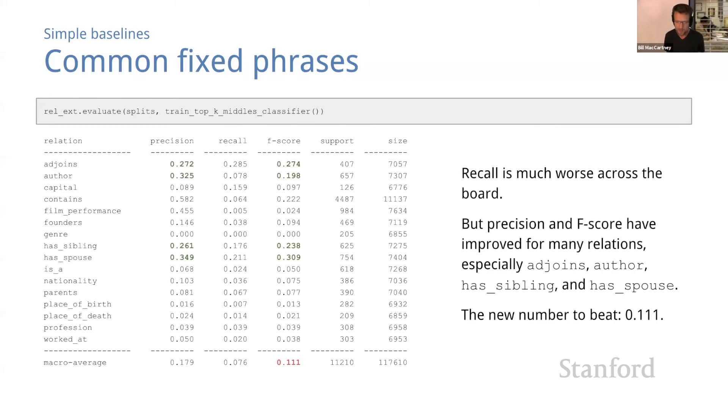When we evaluate this approach we see some really interesting results. First, recall is much worse across the board, and that makes sense because we're no longer just guessing randomly. Before we were saying true half the time, now we're going to be a lot more selective about what we say true to. But precision and F-score have improved dramatically for several relations, especially for adjoins and author and has_sibling and has_spouse.